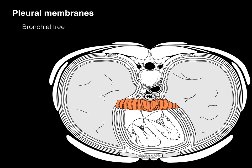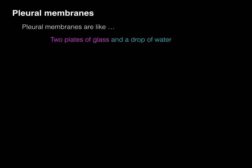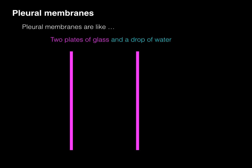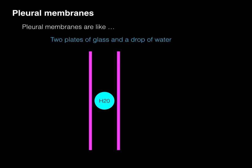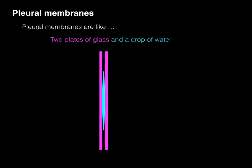There's the bifurcation of the carina and the right and left primary bronchi. The pleural membranes surrounding the lungs are like two plates of glass with a drop of water. As those two plates of glass come together and touch the water, they squish together and through hydrostatic pressure stay vacuumed or suctioned together, so they don't pull apart.